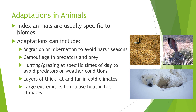Different adaptations can include migration or hibernation to avoid harsh winters. Animals can be camouflaged — like the rattlesnake pictured, which is indicative of the desert biome. Other animals hunt or graze at specific times of day; for example, desert animals come out more at night to avoid hot temperatures. Animals in cold climates have thick layers of fat and fur, while animals like the hare have large ears — not only to hear predators, but to release excess body heat in the desert or grasslands.